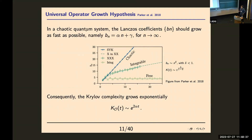The key statement I want to discuss is: linear growth of Lanczos coefficients leads to exponential growth of Krylov complexity. This is supposed to take place only in chaotic systems. For integrable systems, you expect to observe some sort of power law behavior for K-complexity.